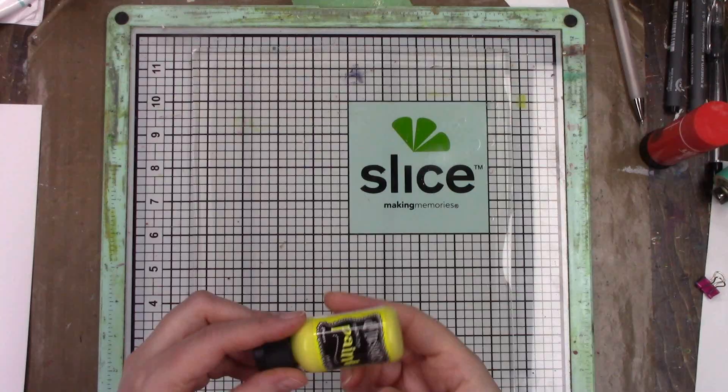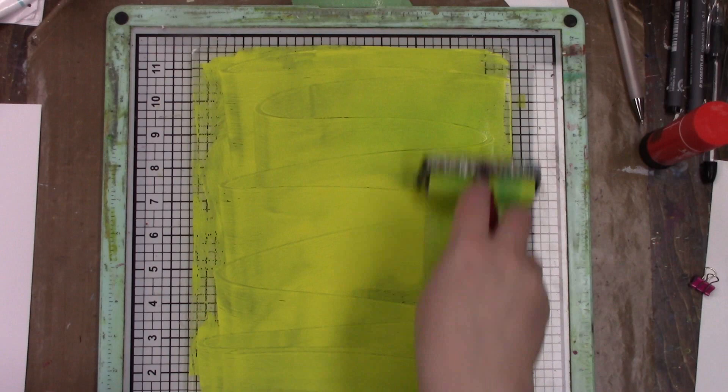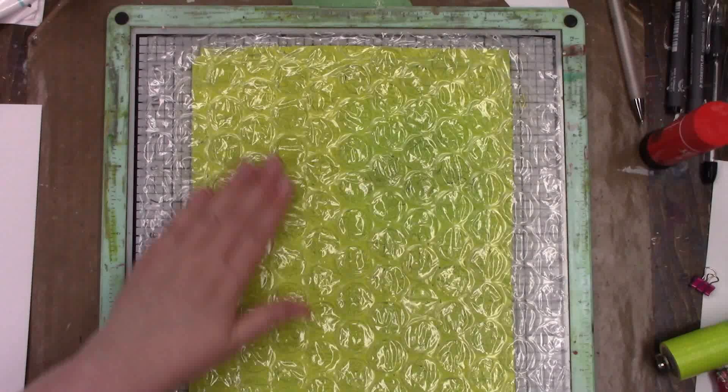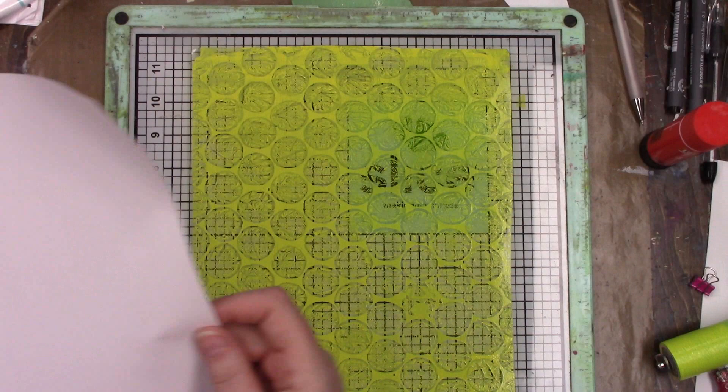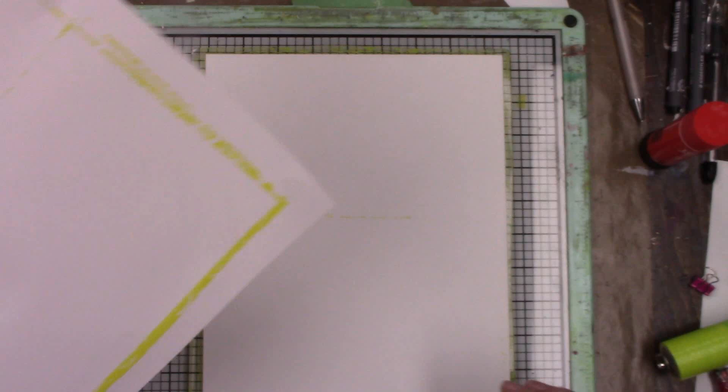Today I'm going to be using some Ranger products. I have my Ranger gel press plate, it's 9 by 11, which is a perfect size for your full sheets of paper. I'm starting with some dilutions paints in lemon zest, and I have this large bubble wrap that I'm just adding to get some texture to that print. This is going to be our very first layer. For these prints I'm not going for anything complicated.